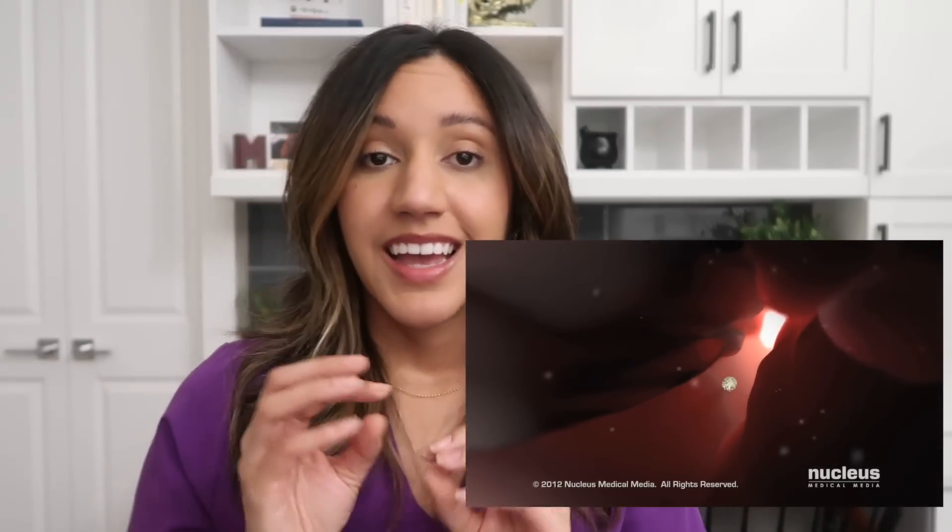After ovulation, the egg lives for 12 to 24 hours, so it must be fertilized. Isn't that insane? That egg is only alive for 12 to 24 hours, so this process of ovulation is pretty short-lived. When we start talking about trying to get pregnant or trying to conceive, that is kind of a tight window — between 12 and 24 hours for everything to line up perfectly — so it must be fertilized by sperm during this time for a woman to become pregnant.